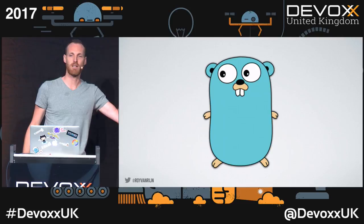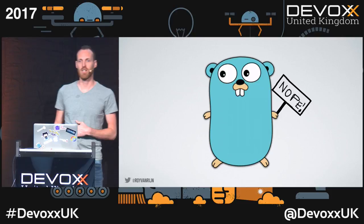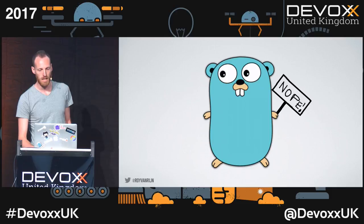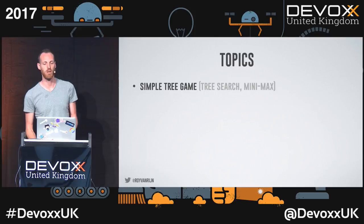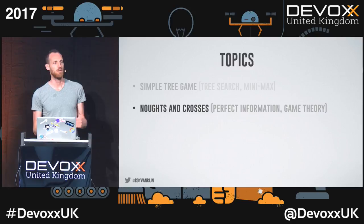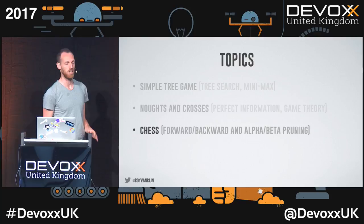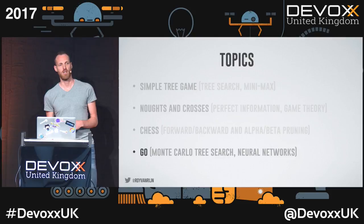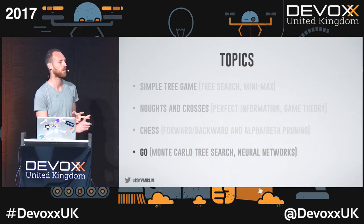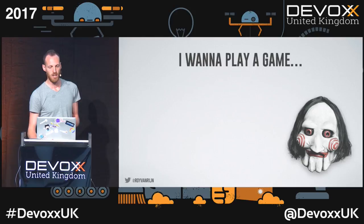Let's get started. If you are here for the programming language Go, well, no. We're not going to talk about Go. We're going to talk about AlphaGo and a lot of other things. We're going to start with a very simple tree game that will teach us how tree search and minimax algorithms work. Then we'll move to knots and crosses, learn about perfect information and game theory. Then we'll jump to chess and look at forward, backward, and alpha-beta pruning. And finally, we'll jump to Go, the hardest game in this list, and learn about Monte Carlo Tree Search and the neural networks currently working in AlphaGo.